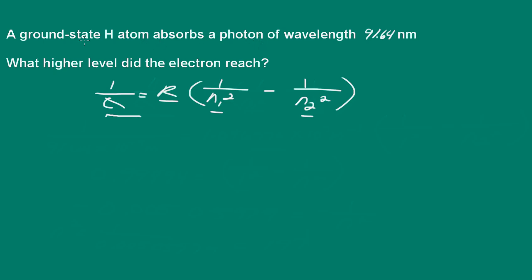Now, in this problem here, we're told that it was a ground state. So N1 is going to be equal to 1. What we're looking for is N2. We don't know what level that is. So we have all the information we need in order to solve this problem.